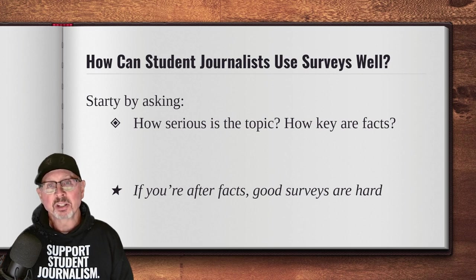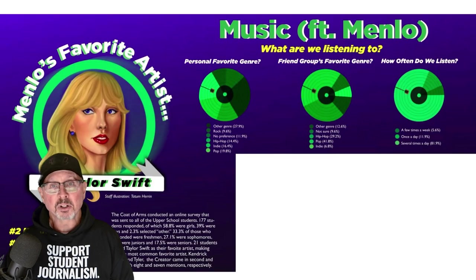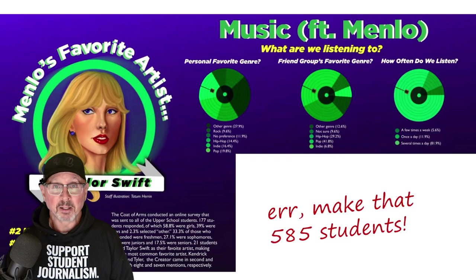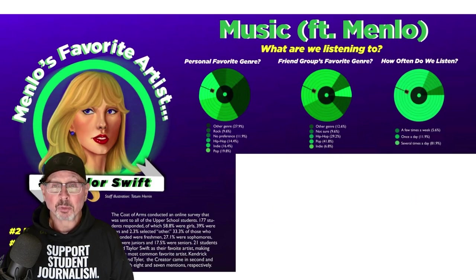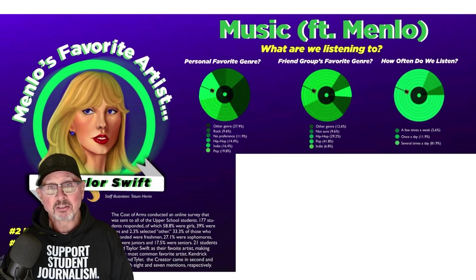Start by asking how serious the topic is. How important is it that your facts are accurate? If you're looking at a light, fluffy topic, maybe precision is less important. For example, a few years ago some staff of the newspaper I advised wanted to do a survey asking students at our school who their favorite musicians were. They asked if it would work to send a survey out to all 285 students by mail. I said that would lead to a lot of bias, mainly because of what's called response bias — the people who responded were only those who read their email and were willing to respond. For a topic like this, where no one really cared what the facts were, I felt it wouldn't be a big journalistic sin, so they did it. Notice that they did show the method they used for the survey.